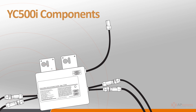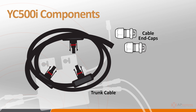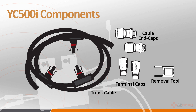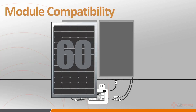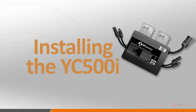There are a few components needed for a successful YC500i installation, including an AC bus or trunk cable, cable end caps to seal off an open end of the trunk cable, terminal caps used to seal off an unused drop on a branch, a removal tool to remove the terminal sealing cap, and MC4 caps for unused DC cables on the microinverter. The YC500i is compatible with both 60- and 72-cell PV modules with a voltage range of 16 volts to a maximum of 55 volts continuous. It requires 22 volts to energize — anything below that voltage level and the inverter will not power up.